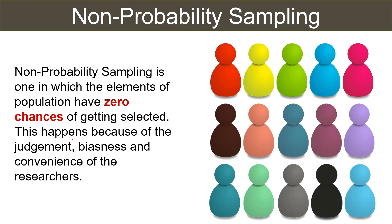Non-probability sampling is one in which the elements of the population have zero chances of getting selected. This happens because of the judgment, biasness, and convenience of the researchers. It involves deliberate selection of particular units of the universe by the researcher to form the sample representing the entire population. The researcher's choice with regard to the selection of elements or items is supreme. It is called non-probability sampling because it does not follow the theory of probability while choosing the elements from the sampling population.